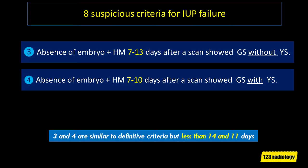The third and fourth suspicious criteria are similar to the definitive criteria but use shorter time intervals — less than 14 and 11 days respectively. For example, absence of embryo with heart motion 7 to 13 days after a scan showed a gestational sac without a yolk sac. Note that these time intervals are slightly less than the time intervals required for definitive diagnosis of failure.